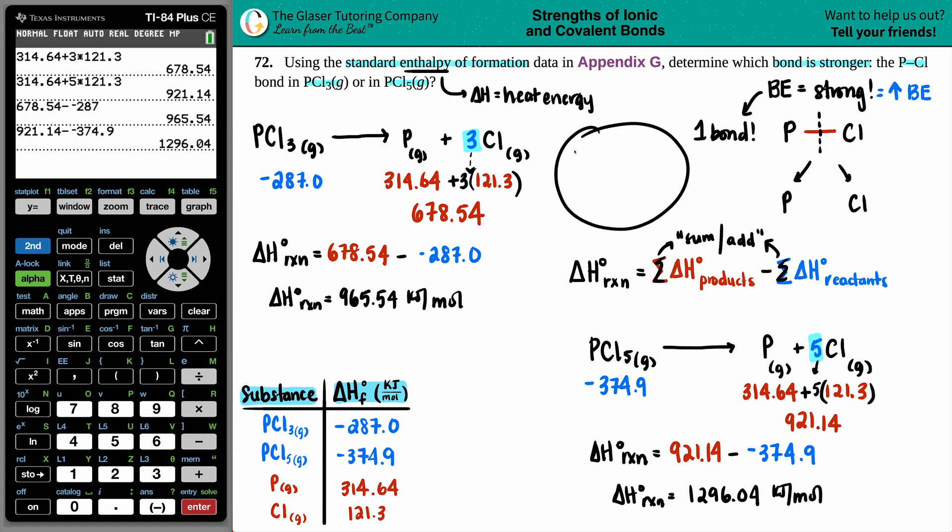My suggestion is to just quickly draw the Lewis structure to see what these actually look like. For the PCl3, it's just three single bonded chlorines attached to the phosphorus. The phosphorus has two electrons, and then each chlorine has six electrons.